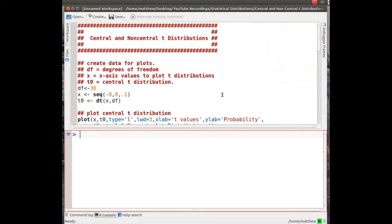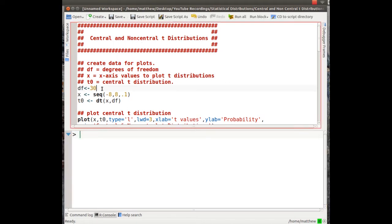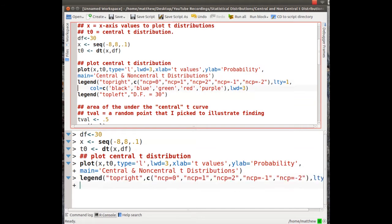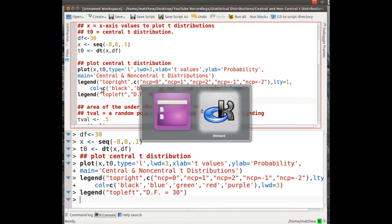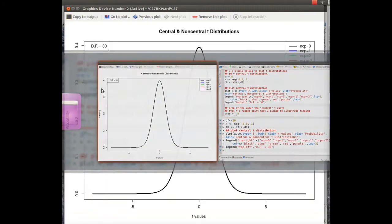Okay, we're in R. I'm on a Linux machine, Ubuntu specifically, and I'm using RKWard, which is a GUI for R. I'm going to illustrate the central and non-central t distributions, and for this illustration, we'll just pick a degrees of freedom of 30, create some data and a t, and we will plot this data.